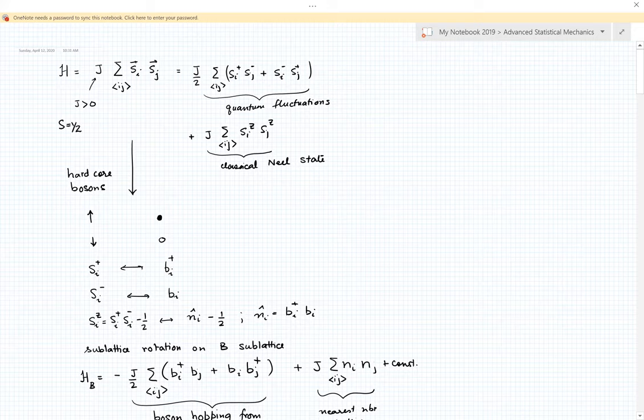Let's begin. Here is the Heisenberg model that we talked about last time. This has two pieces: the XY term which can be written in terms of raising and lowering spin operators, and the ZZ interaction. If we think of the reference state to be the ZZ term, for antiferromagnetic interactions this describes a classical Néel state.